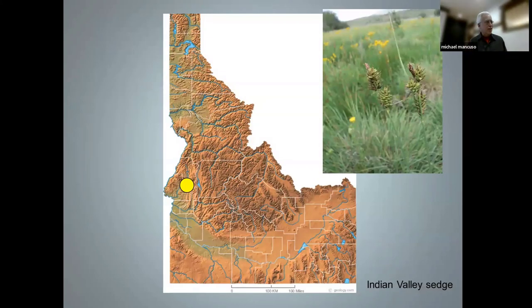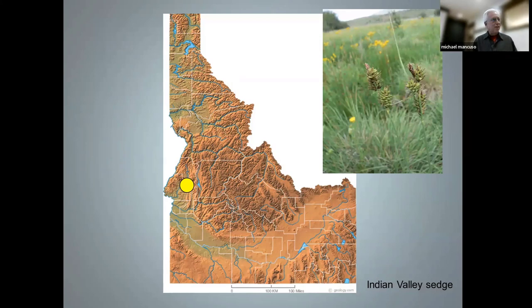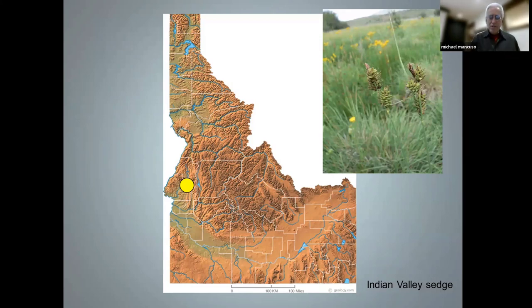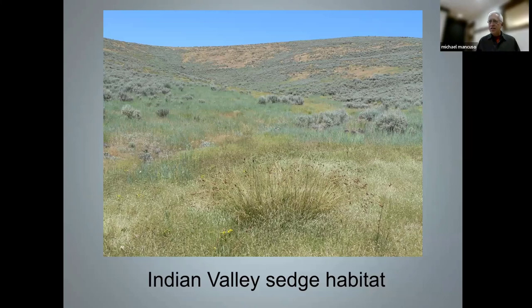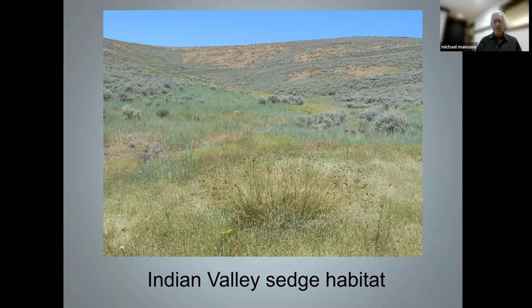After Curtis's discovery, surveys by the BLM, Forest Service, and Fish and Game found about 10 more populations, mainly around Council, extending down into the northern part of Washington County. Most of these populations are quite small with fewer than 100 plants — a really rare plant. Its habitat is ephemerally wet areas such as intermittent creeks, seeps, and areas that get some sub-irrigation part of the year — basically transitional from really wet, flooded habitats to dry uplands.